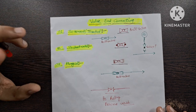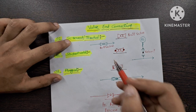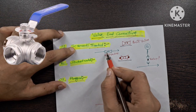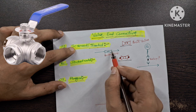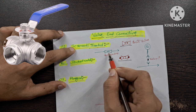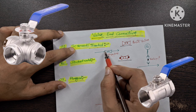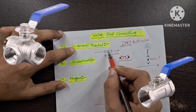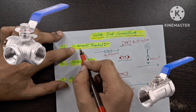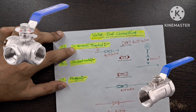If I discuss the screwed and threaded end connection, you will see in the P&ID it will look something like this — this is your pipeline and here your valve is connected. This is your ball valve, and this ball valve is connected with the line. This means that this is your screwed or threaded end connection valve.